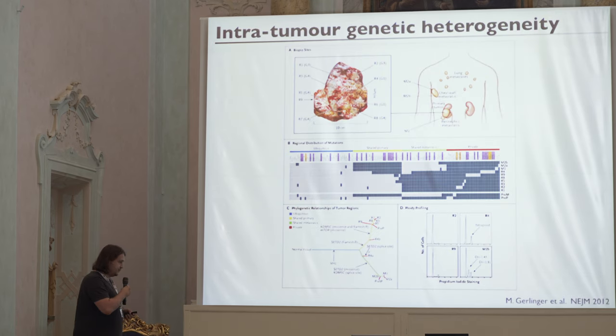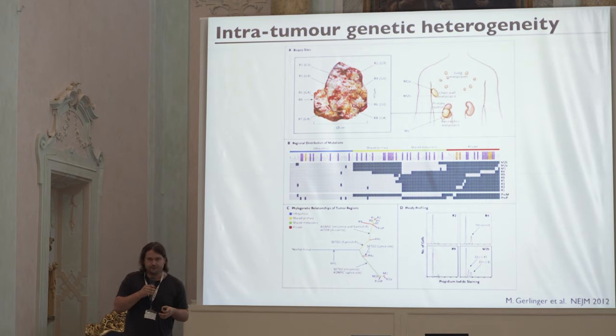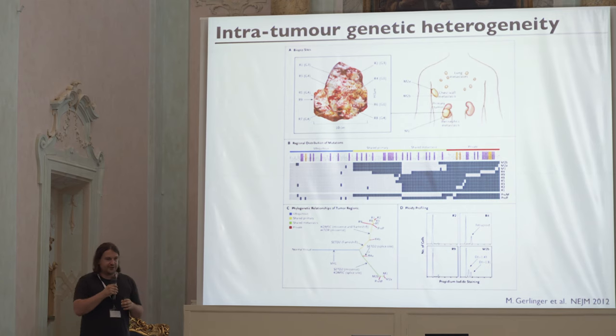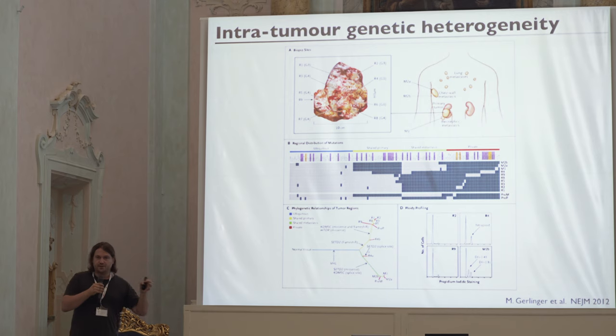Because we've had so many talks about intratumor heterogeneity, I don't need a long introduction. Briefly: if we take parts of a tumor — usually bulk samples — and sequence them, we find tons of mutations. Some are shared between sites, some are unique to certain sites. We want to make theoretical sense of these patterns, starting from very simple assumptions and seeing how far they bring us.